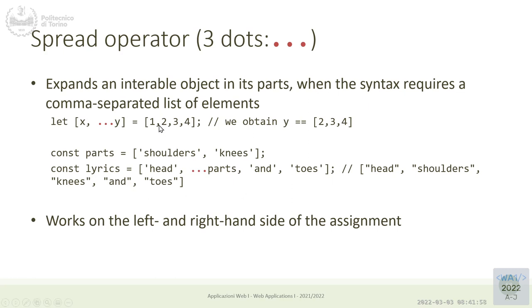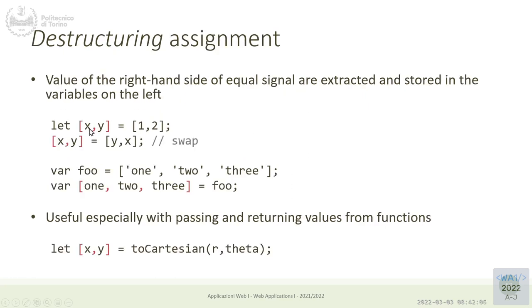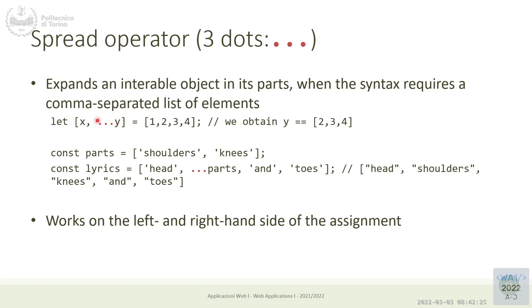If I try to destructure an array and I don't know how many elements it contains, I cannot use a syntax like X and Y because I would only pick the first two elements and the next ones would be ignored. But if I add a third element I can add another variable. On the destructuring side of an assignment, the three dots stand for 'all the rest.' So sometimes the spread operator is also called the rest operator — 'give me everything else.' Everything else will be put into the Y variable, which at that point would be an array because it must contain all the leftovers.